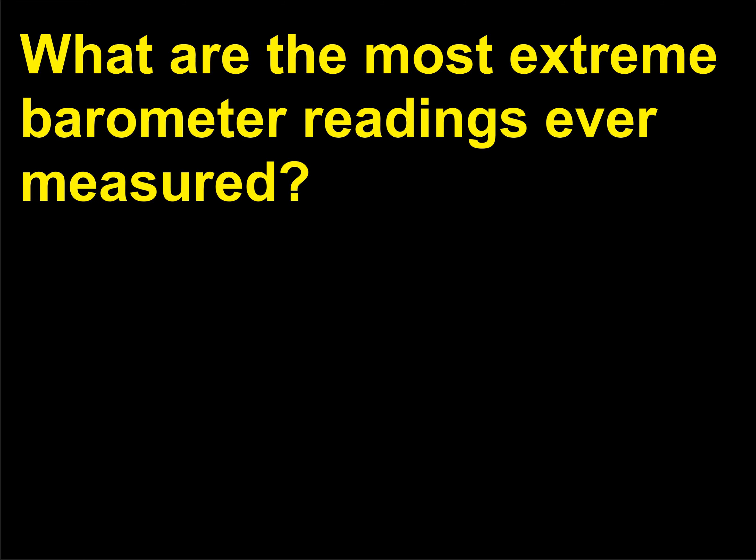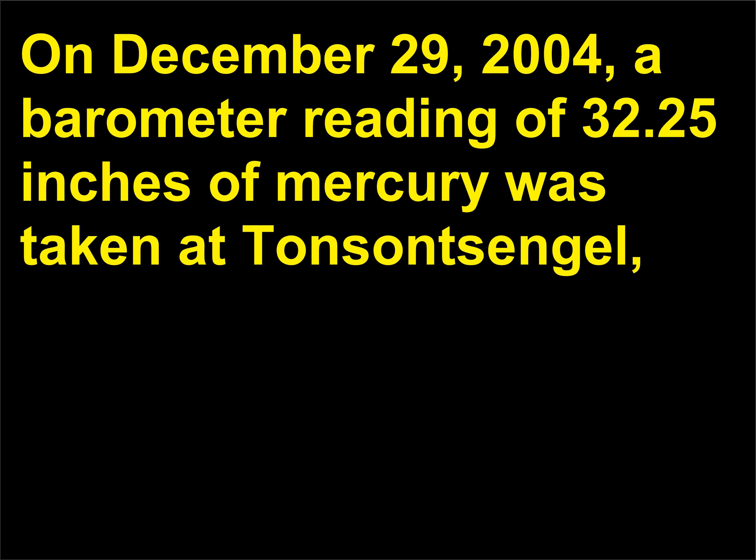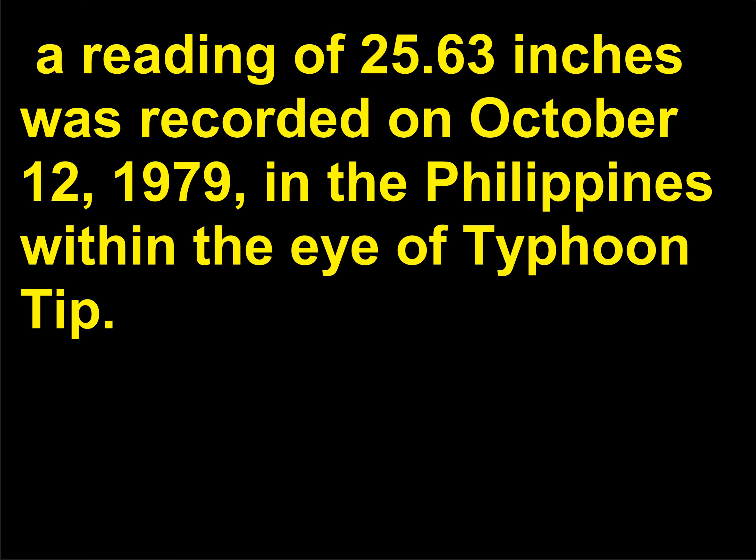What are the most extreme barometer readings ever measured? The record high of 32.25 inches of mercury was taken at Tosontsengel, Mongolia — a world record. At the other extreme, a reading of 25.63 inches was recorded on October 12, 1979, in the Philippines within the eye of Typhoon Tip.